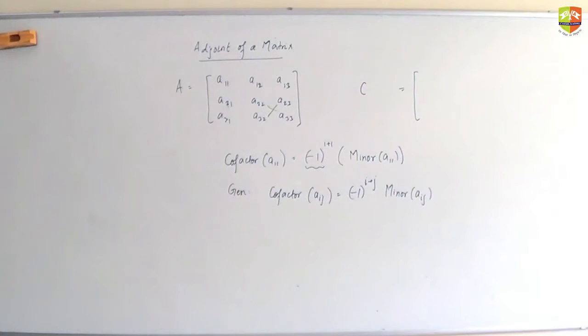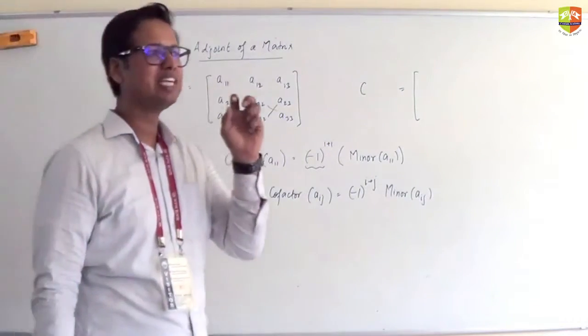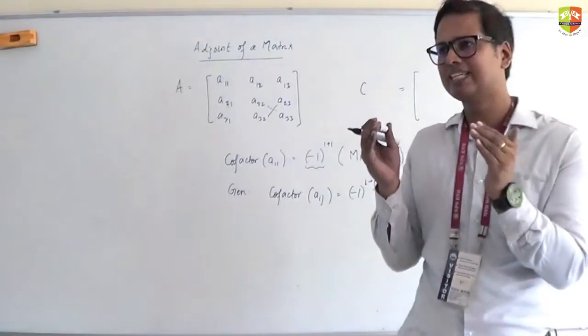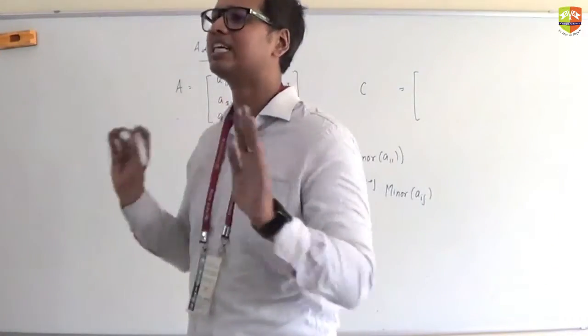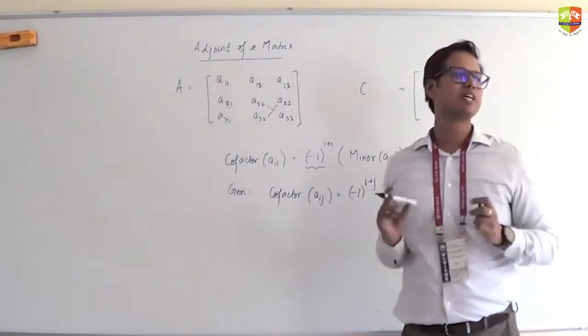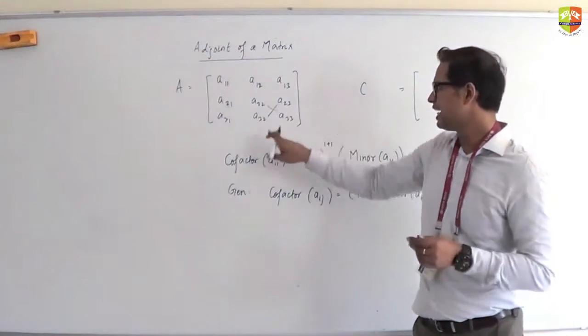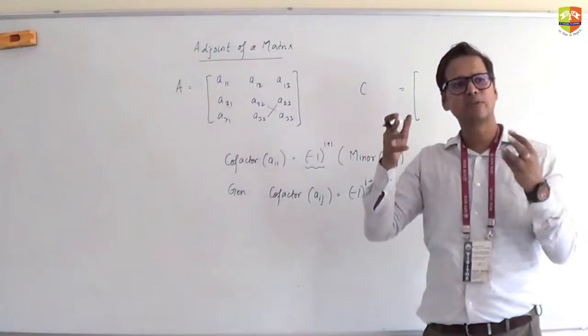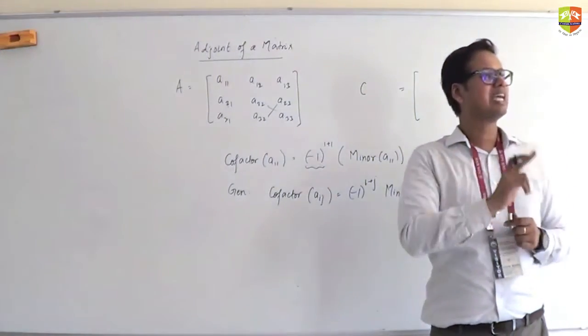Now what is minor? Minor means hide the column and the row in which A11 falls. Whatever numbers you see left - if there are four numbers like this, then do a cross-multiplication just like you do it in determinants. So it would be A22 into A33 minus A32 into A23. That would be called the minor.